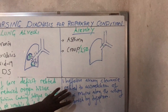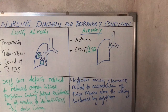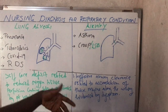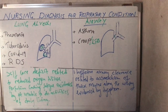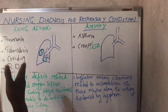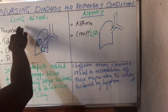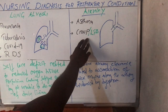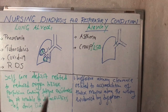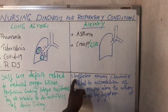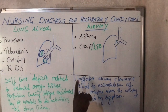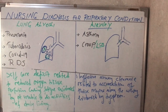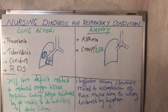The interventions for ineffective airway clearance are just the same as for impaired gaseous exchange. Some nursing diagnoses under airway conditions are the same as for lung alveoli conditions — only a few change. The first change we made was replacing impaired gaseous exchange with ineffective airway clearance. The second change involves chest pain.